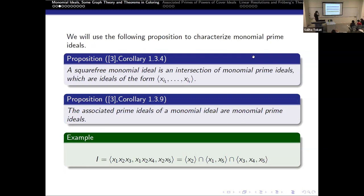Next, we know that we can decompose a polynomial ideal into an intersection of prime monomial ideals. In our case, prime monomial ideals will be ideals that are only generated by variables. The associated prime is actually a rather large definition, but in our case, associated primes will be the prime ideals that are in the decomposition of the monomial ideal.